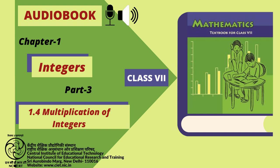Using this, we get: minus 33 multiplied by 5 is equal to 33 multiplied by minus 5, which is equal to minus 165. We thus find that while multiplying a positive integer and a negative integer, we multiply them as whole numbers and put a minus sign before the product. We thus get a negative integer.